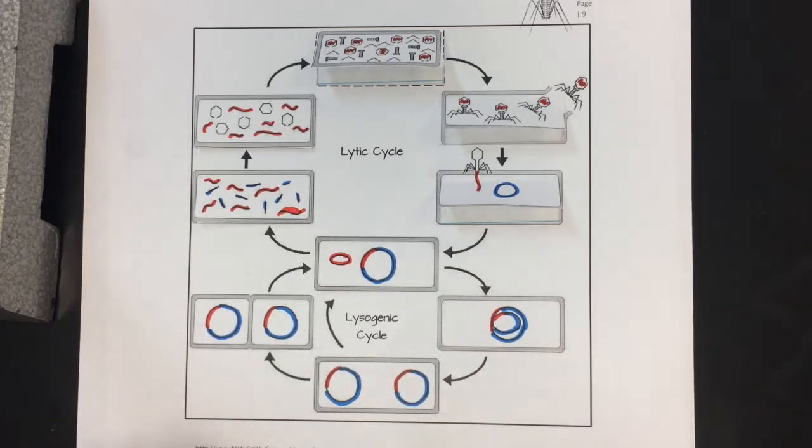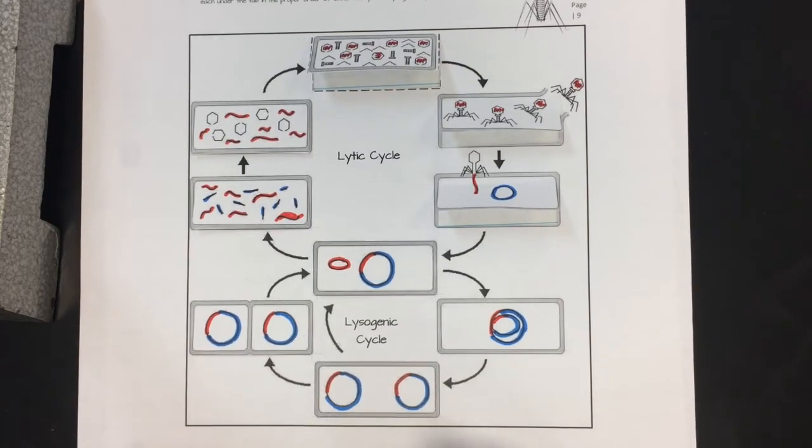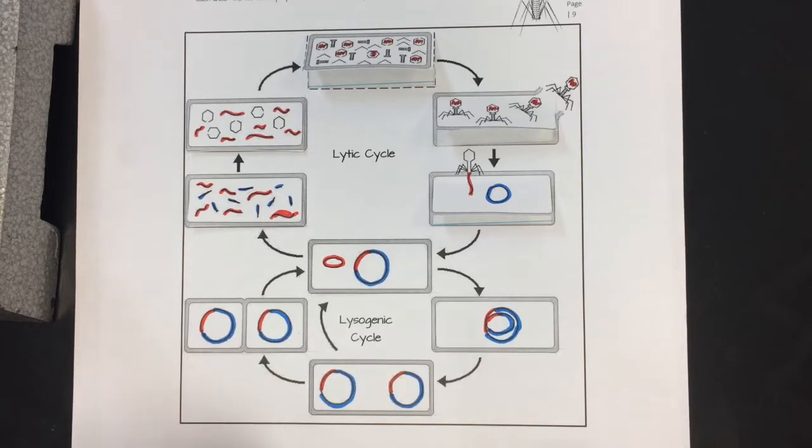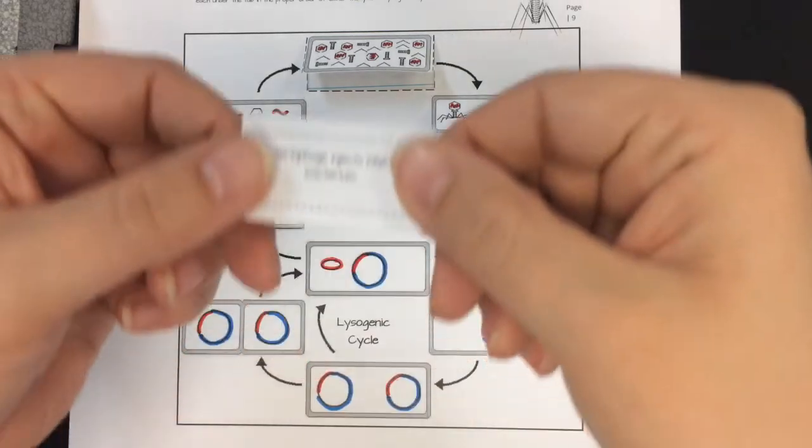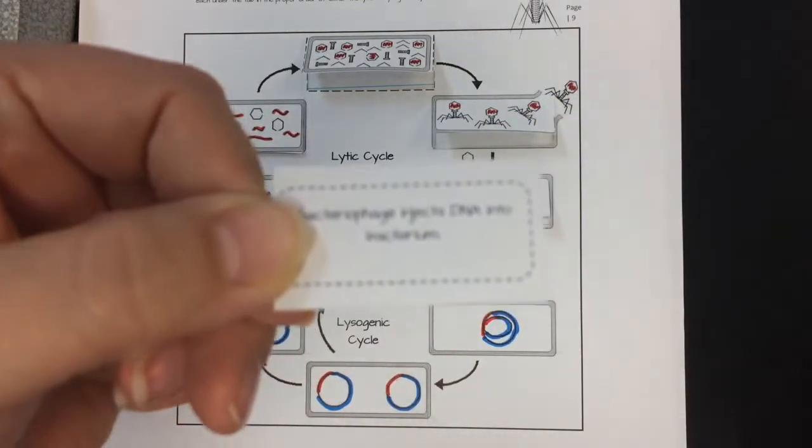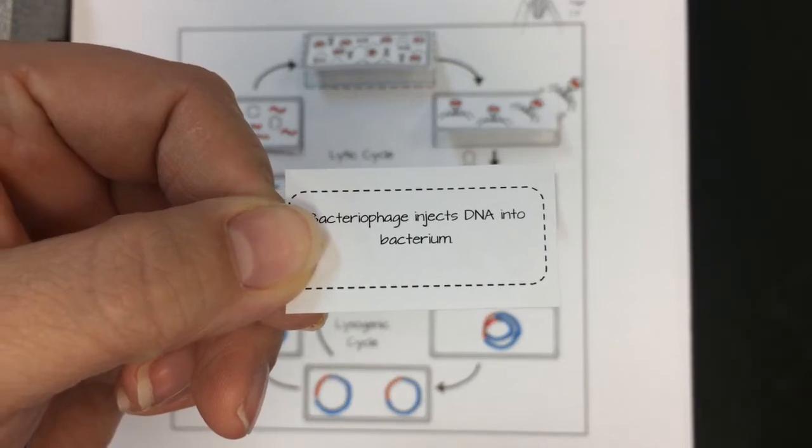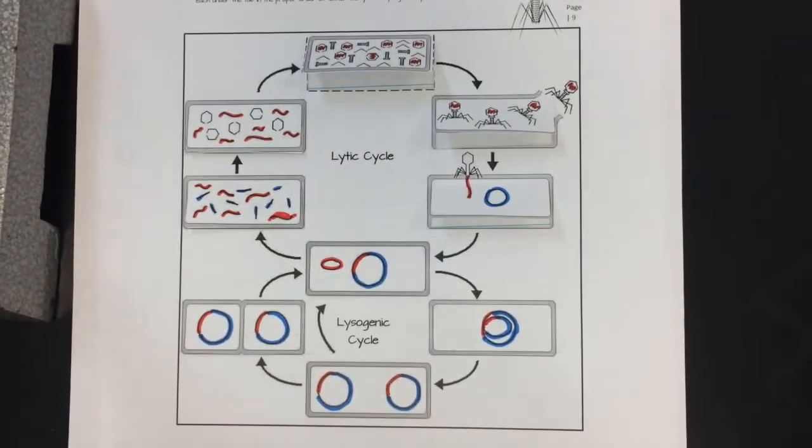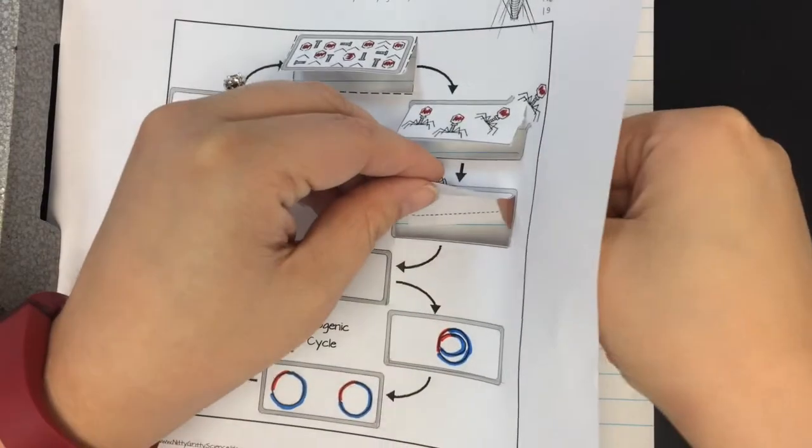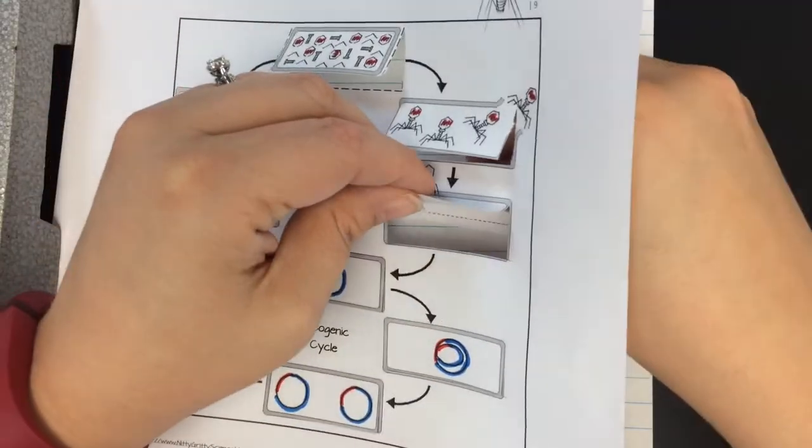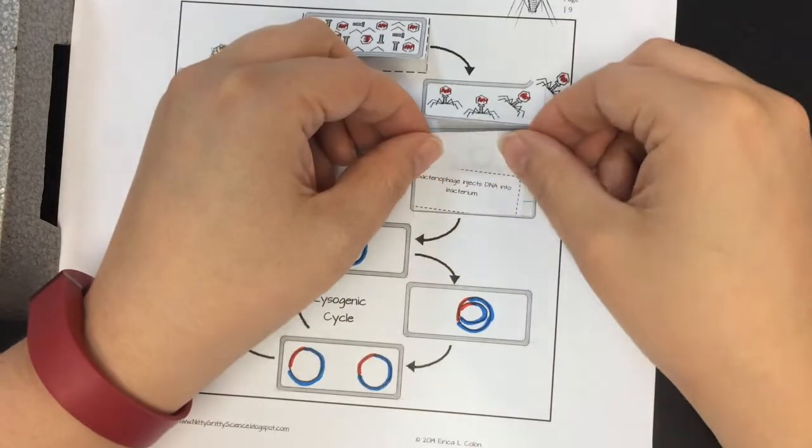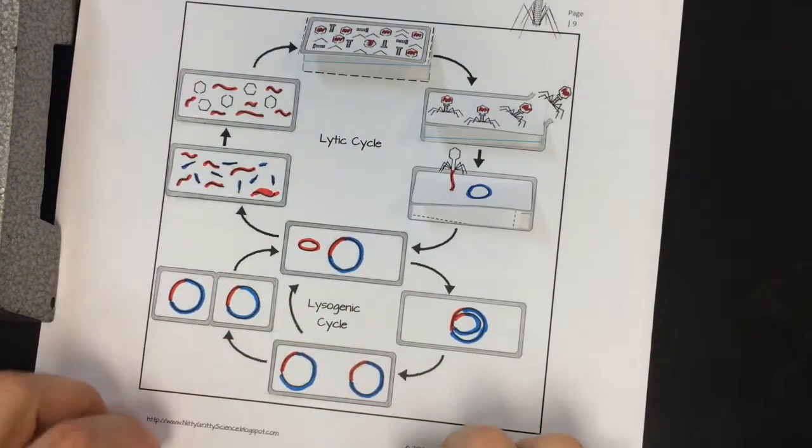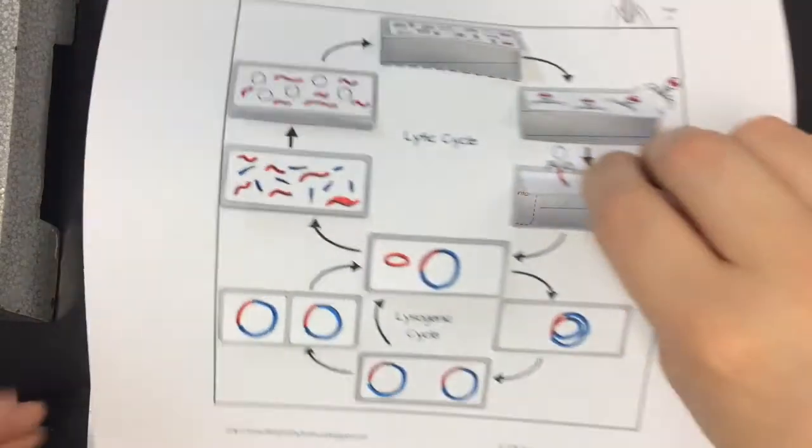And so one of the easiest ones to look at is the first infection where that virus has landed on the bacteria and is going to inject its DNA into the bacterium, which is this guy right here. Now this one is eventually going to end up underneath this little flap so that when you go to study it later and you open the window, you get the reminder of what's happening here. Now this is a little tricky, but I figured out a way to make it a bit easier for you to do these.